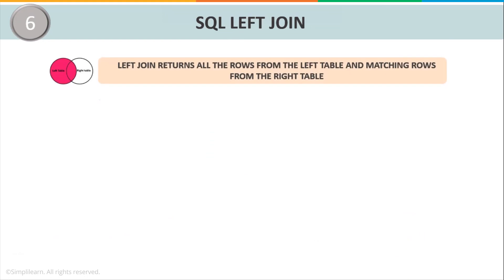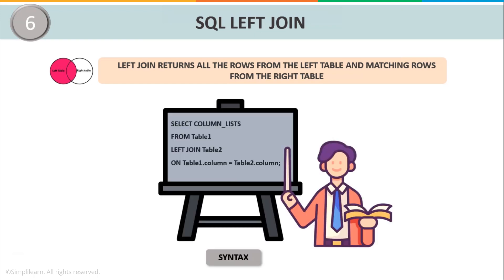Next we have SQL Left Join. Left Outer Join, also known as Left Join, results in a table containing all the rows from the left table (the first table) and only the rows that satisfy the join condition from the right table (the second table). Any missing values from the right table are represented by null values. The syntax is: SELECT column_list FROM table1 LEFT JOIN table2 ON table1.column = table2.column. Make sure you maintain the syntax using table_name.column_name, otherwise it will throw an error.